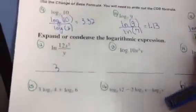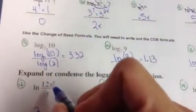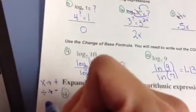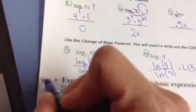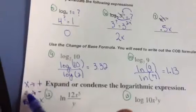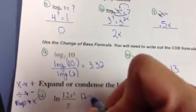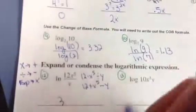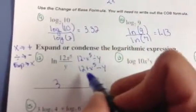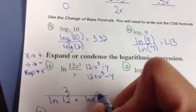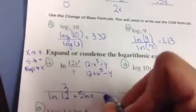We are expanding or condensing. What I need to do is take any multiplication and turn it into addition, division turns into subtraction, and exponents turn into multiplication. When I'm expanding, this is one log so I want to expand it out — going from multiplication to addition. So 12 times x to the fifth divided by y becomes ln(12) plus 5·ln(x) minus ln(y). Each of these terms gets the log, and the exponent 5 moves to the front of its log.